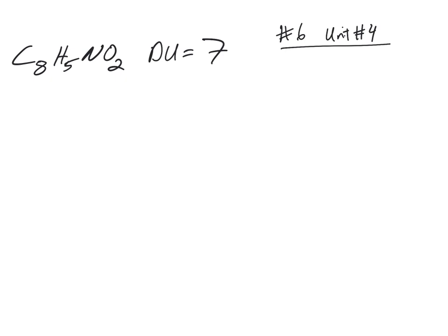And what does that mean? Degrees of unsaturation equals the total number of rings plus pi bonds in the molecule. Rings plus pi bonds, the total number.